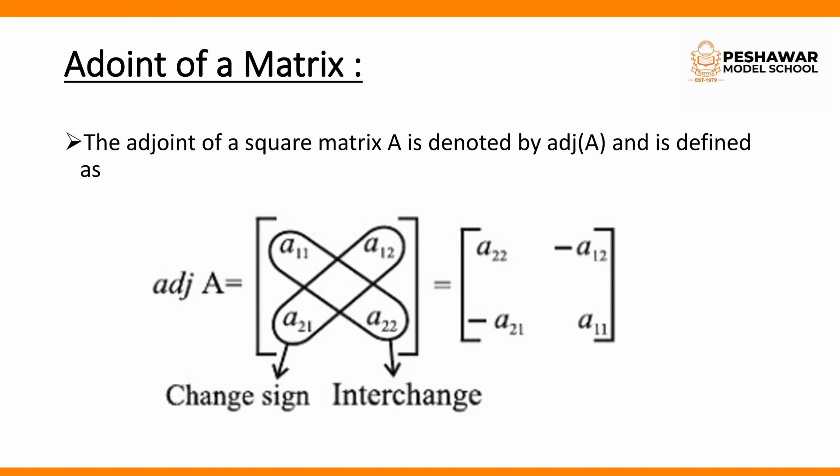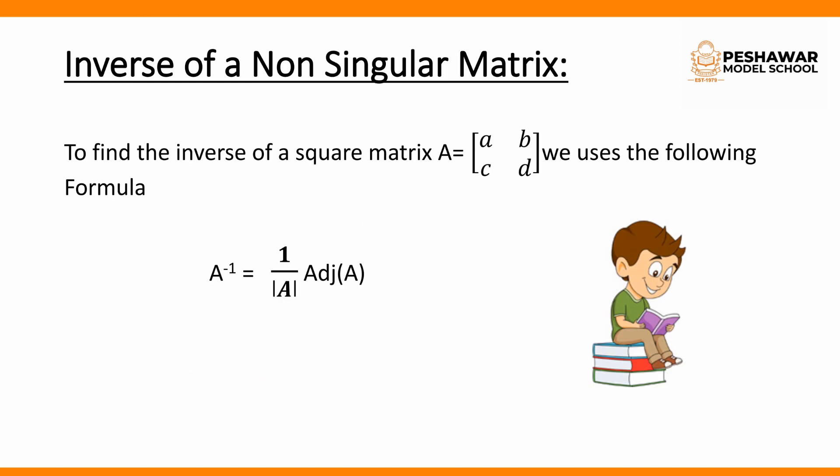The adjoint of a matrix can be found by interchanging the positions of the main diagonal elements and changing the signs of the second diagonal. This method applies for a 2×2 matrix. For a 3×3 matrix or larger, the adjoint can be found using cofactors.